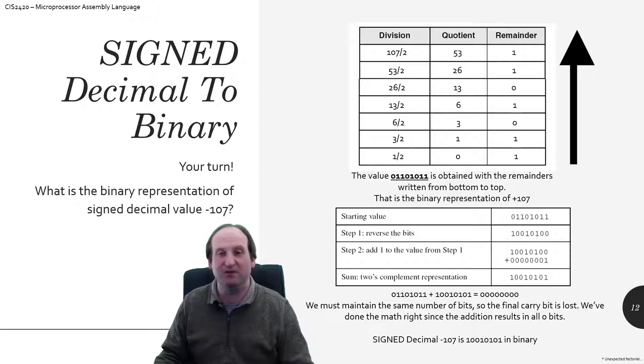So I get 01101011, and if you double check it, that is correct. That is 107 in pure, basically unsigned positive binary.